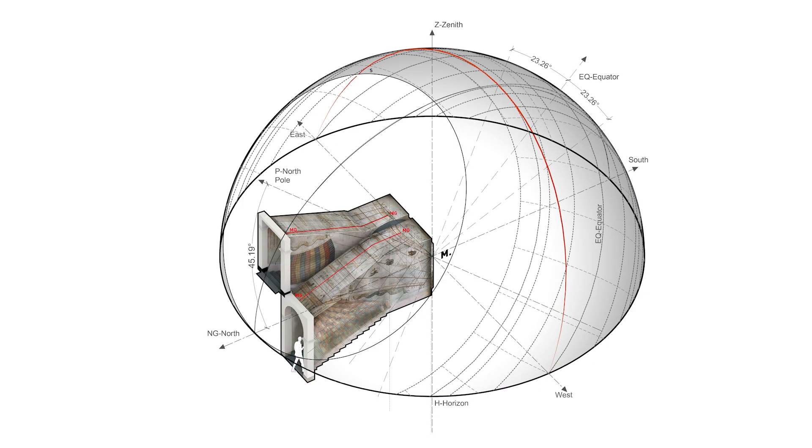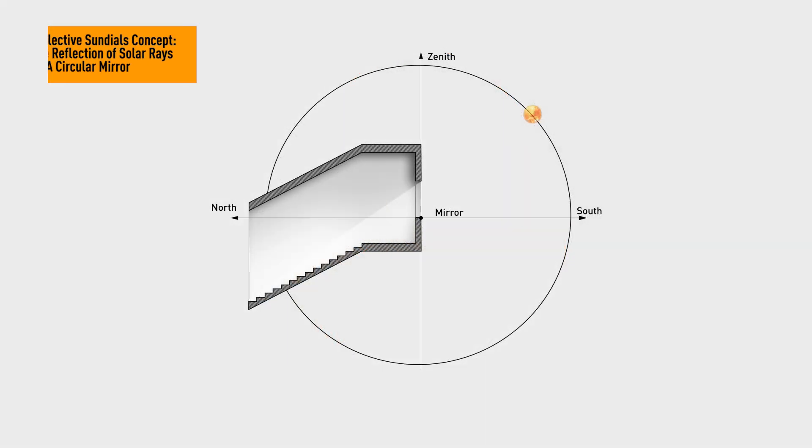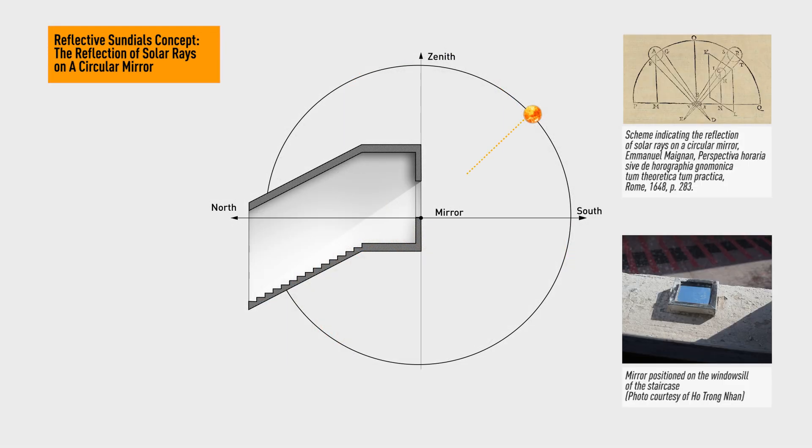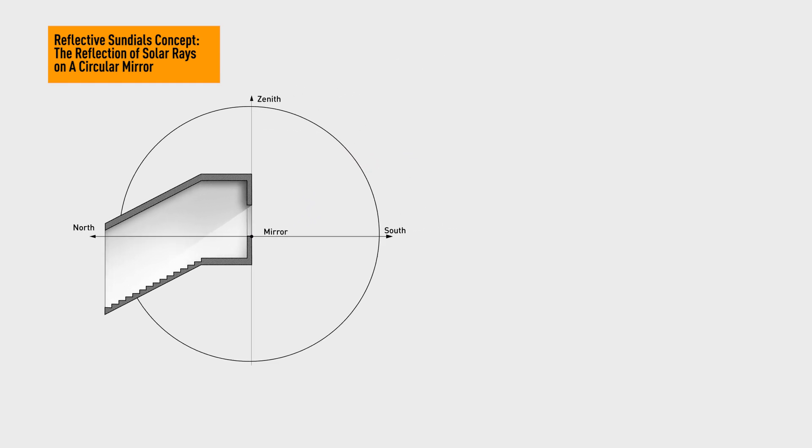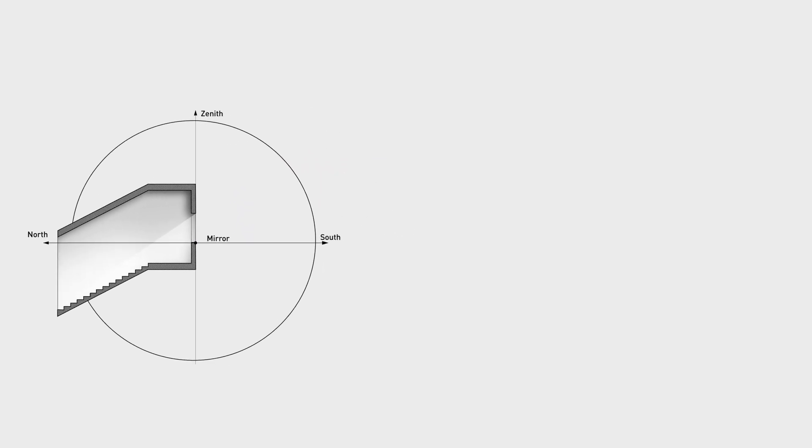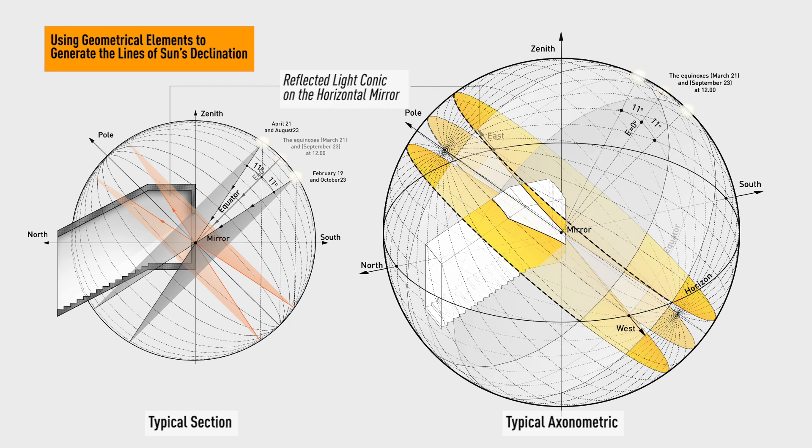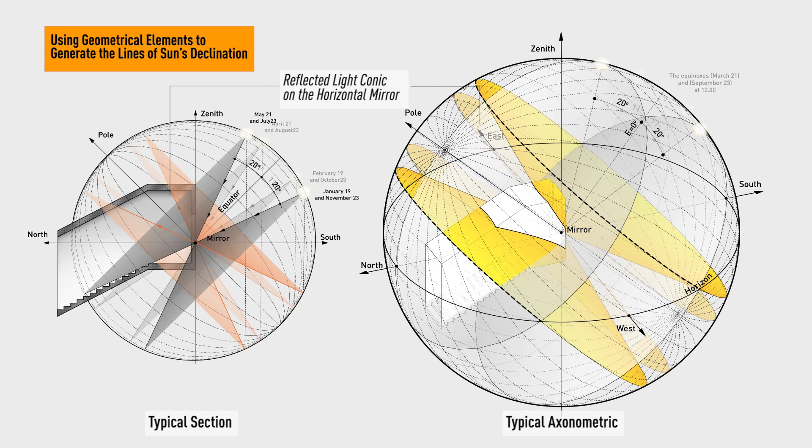The reflected sundial is a unique sundial that indicates the time by reflection principle. The sundial is based on the rules of light ray reflection from the surface of a tiny mirror that is attached to a surface such as a window sill.